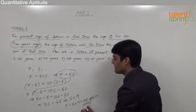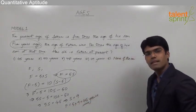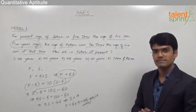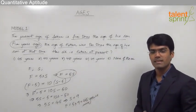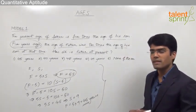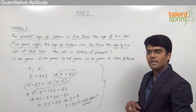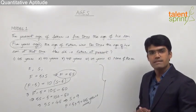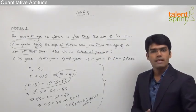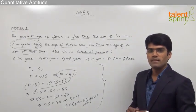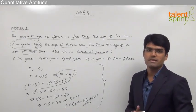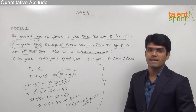So the father's present age is 45 years, which is given in option number 1. But this is the conventional way of solving the problem — writing down the equations from the given statements and solving them. Let us now see how to get the answer in a smart way by eliminating the wrong answers.